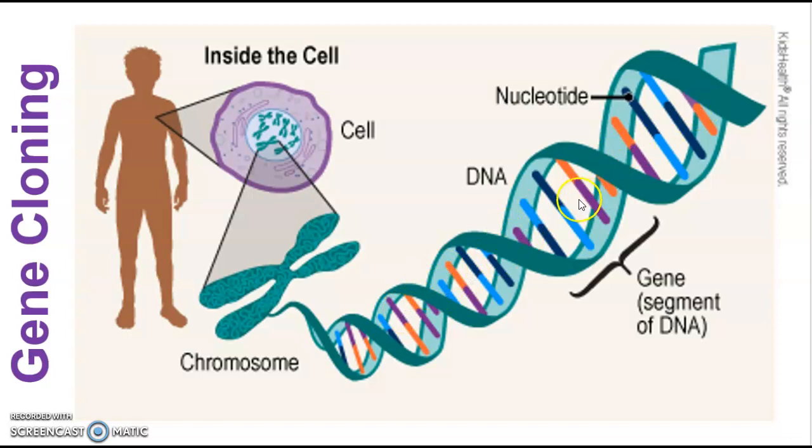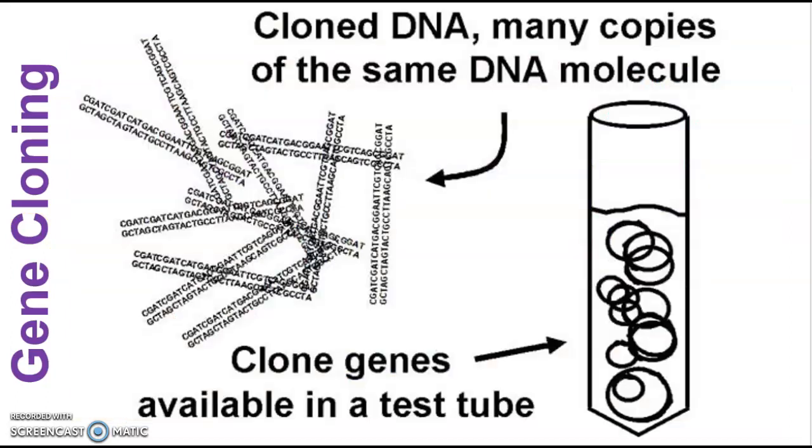Imagine a single gene on a chromosome in a cell. The first part of cloning is we have to isolate that gene out of that cell. And then when we do, we can use a process to make multiple copies of that same gene, that small genetic sequence of interest.